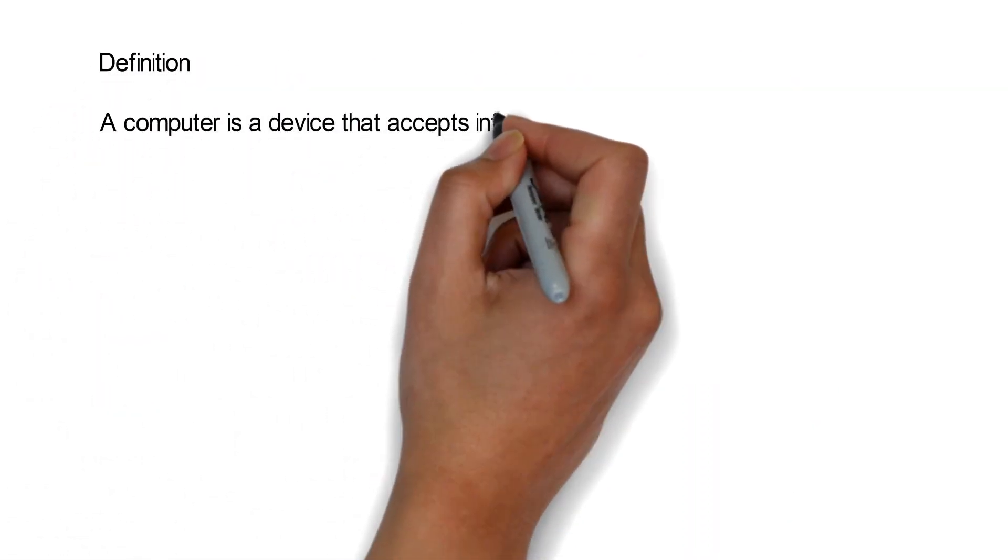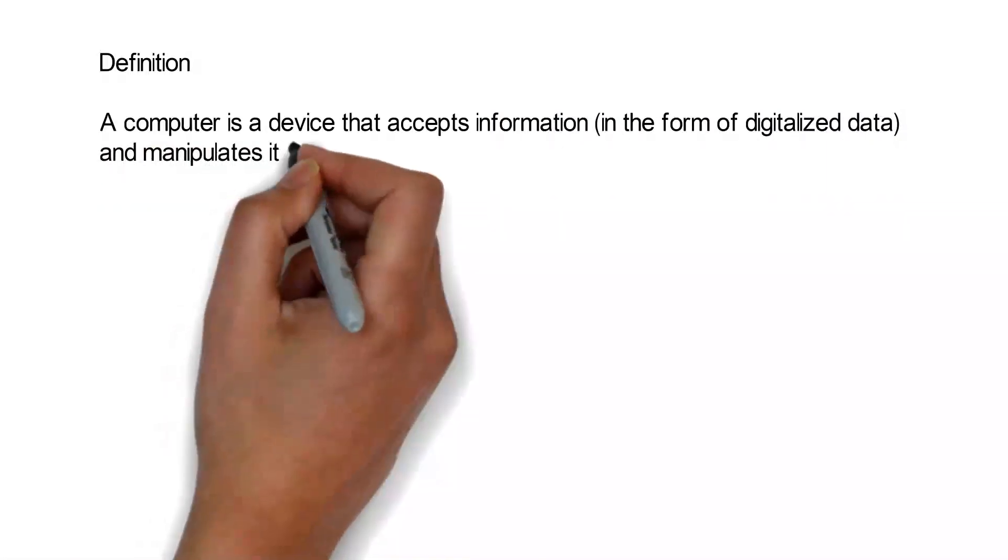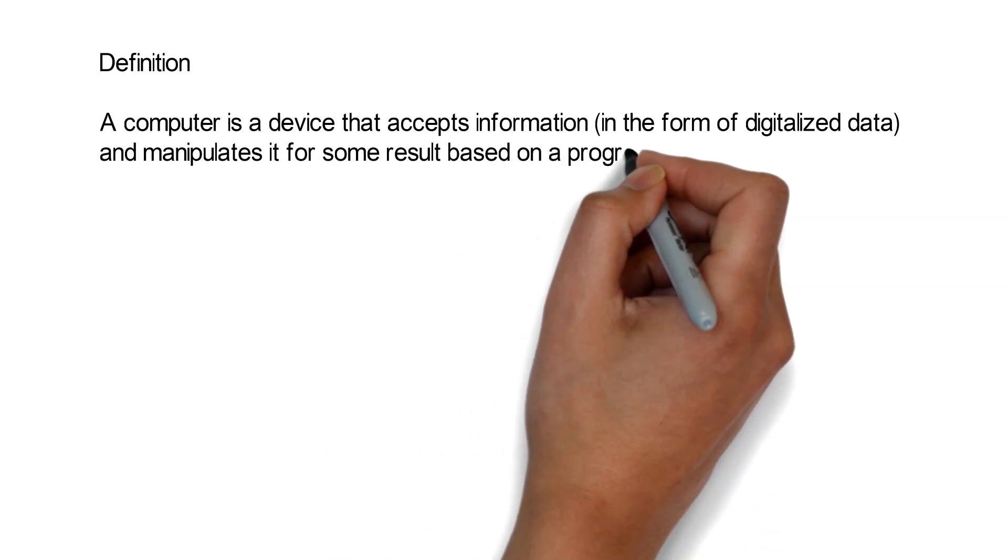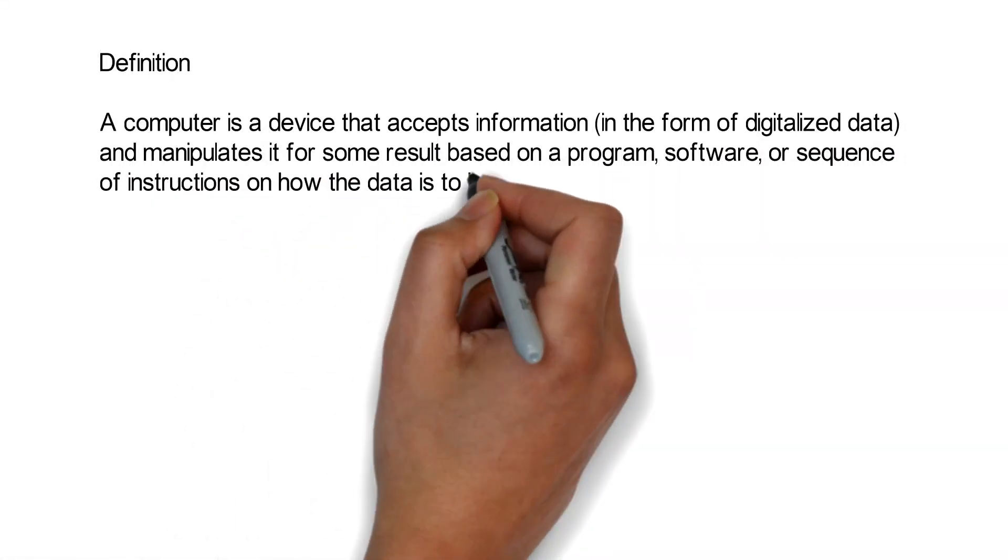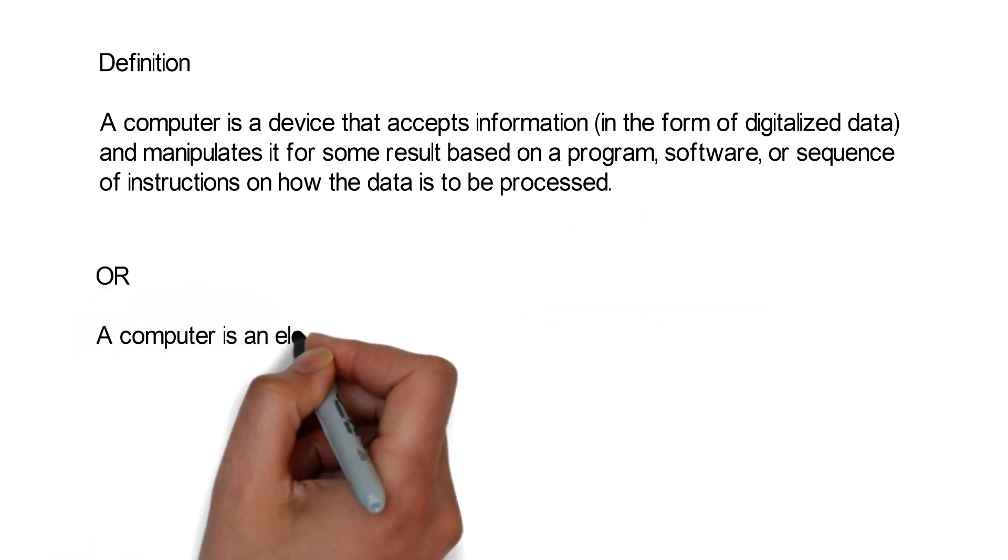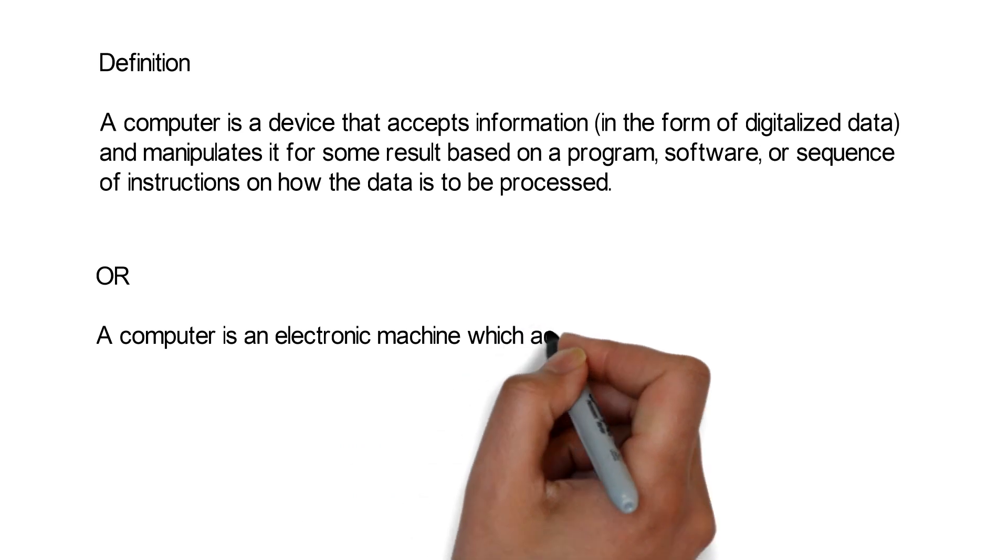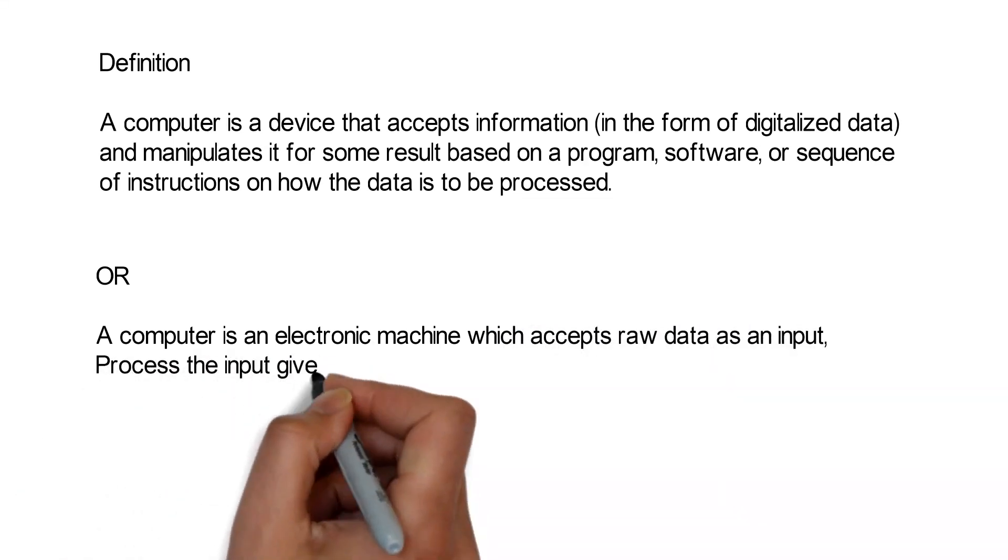Definition: A computer is a device that accepts information in the form of digitalized data and manipulates it for some result based on a program, software, or sequence of instructions on how the data is to be processed. A computer is an electronic machine which accepts raw data as an input, processes the input given by user, and gives meaningful results.